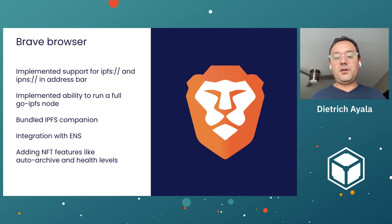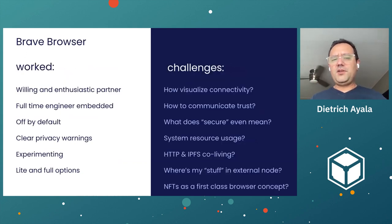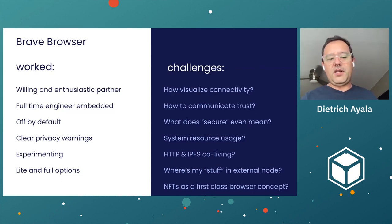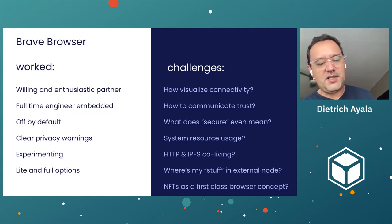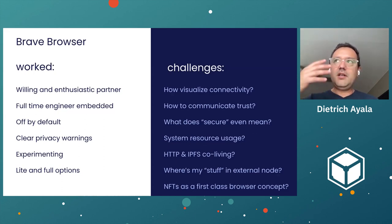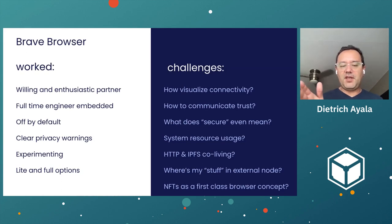They implemented protocol support and bundled the optional ability to turn on a full GoIPFS node. Some things that worked: we had willing, enthusiastic collaboration — we embedded an engineer full-time in their team. We made a bunch of decisions around user experience: IPFS is presented off by default, with very clear privacy warnings. We experimented a lot. What shipped first looks pretty different from what it looks like today. We made UX tweaks, changed how the address bar is constructed and what it communicates to end users, and shipped a light option on by default with the full option off by default.